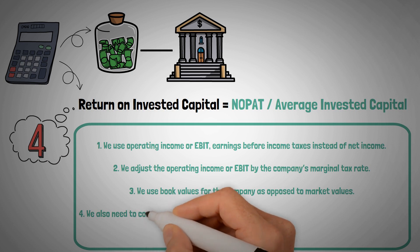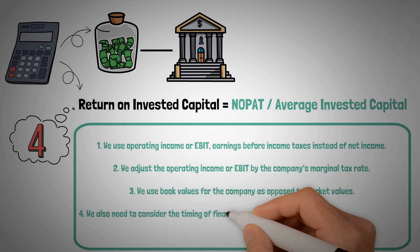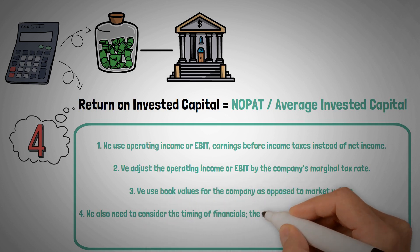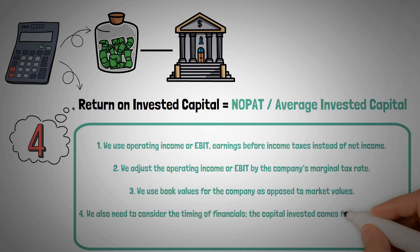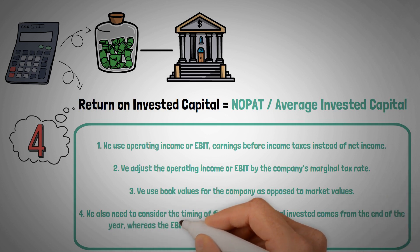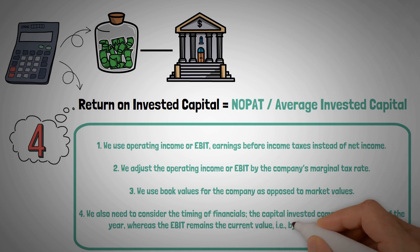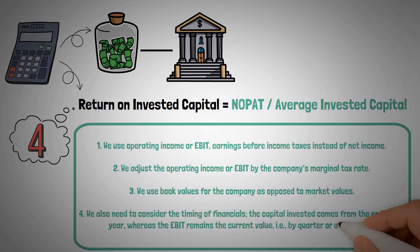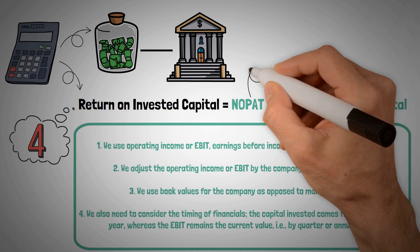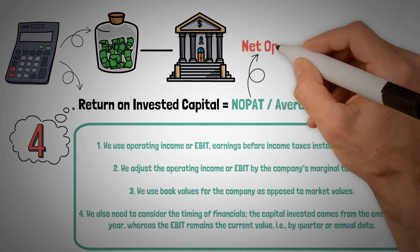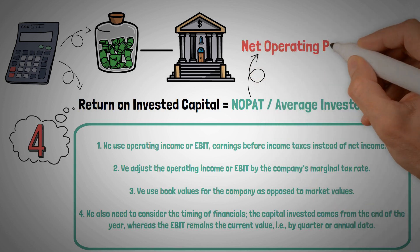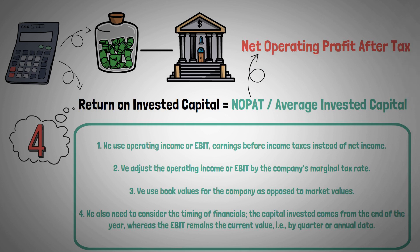Number four: we also need to consider the timing of financials. The capital invested comes from the end of the year, whereas the EBIT remains the current value — i.e., by quarter or annual data. A final note before we dive in: NOPAT stands for Net Operating Profit After Tax.